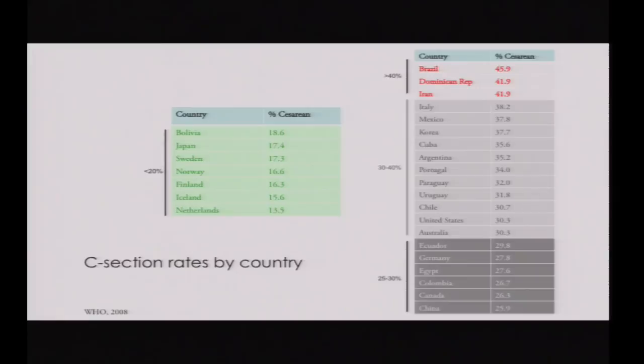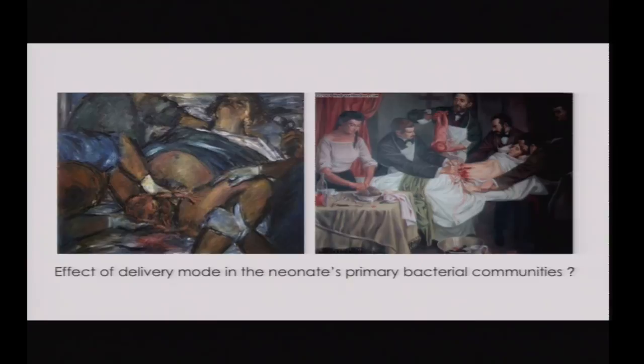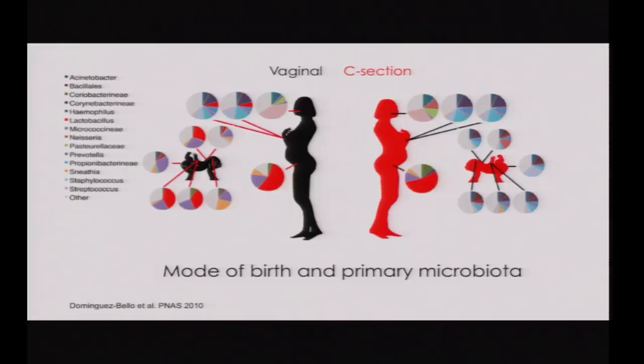Basically, doctors and mothers think there is no cost associated with c-section — that c-section is okay and has no biological cost or collateral effects. That's the belief. So we asked: what is the difference in newborn microbiota by delivery mode?